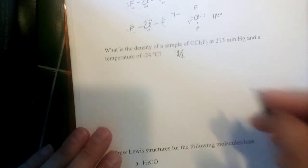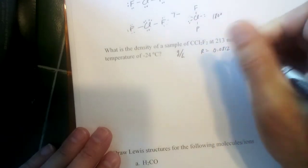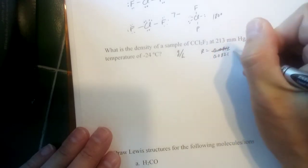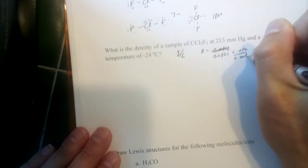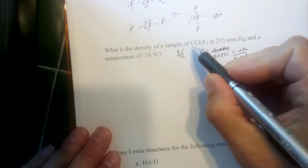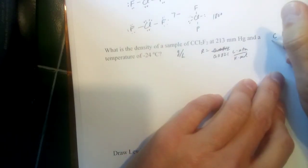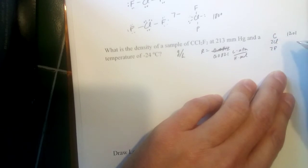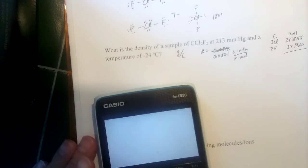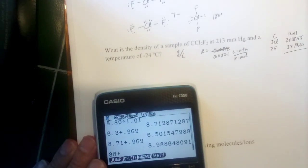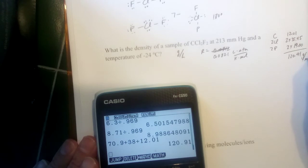The other pieces of information that would be helpful here are our gas constant. Now, on the test, 0.0821 liter atmospheres per Kelvin mole, right? That's helpful. And the other thing we could get here is molar mass. So that would be a good thing to have here. One carbon, two chlorines, two fluorines. So 12.01, 2 times 35.45, if you find chlorine in your periodic table, and 2 times 19.00. So the molar mass here, 38 plus 70, molar mass of this guy is 120.91 grams per mole.